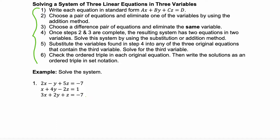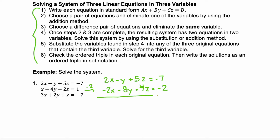Next, step 2: choose a pair of equations and eliminate one of the variables using the addition method. I'm going to keep my first equation 2x minus y plus 5z equals negative seven. And notice if I multiply my second equation by negative two, it will allow me to use addition and eliminate that x variable. So I'll have negative 2x minus 8y plus 4z equals negative two. Using addition, my x variable is gone and my y variable gives negative 9y plus 9z equals negative nine.